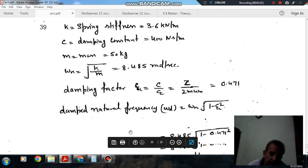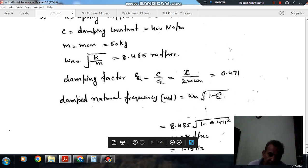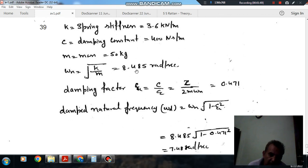The damped natural frequency is given by omega_d = omega_n·sqrt(1 - xi²). Here xi is 0.471 and omega_n is 8.485.